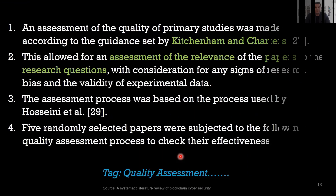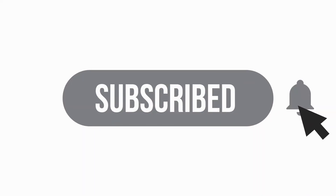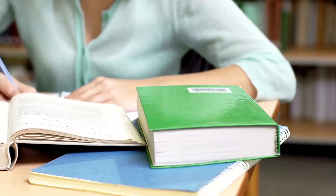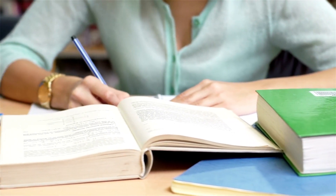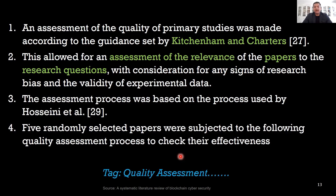Quality assessment refers to another level of screening of papers. The first level of screening was inclusion/exclusion criteria, where on most occasions you screen based upon the quality of the publication — for example, a journal paper published in a star or ranked journal. Quality assessment goes a step further and looks into papers already selected based on inclusion and exclusion criteria, then examines whether specific aspects of the study help you answer your research question.